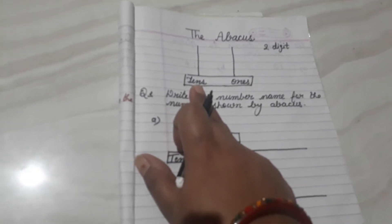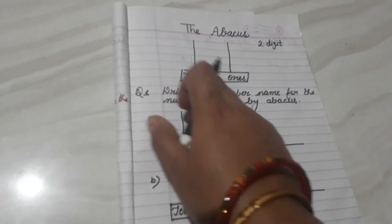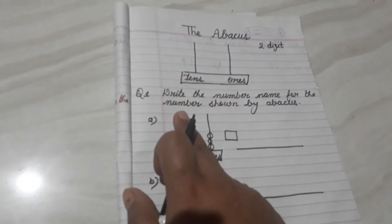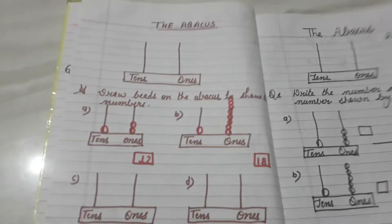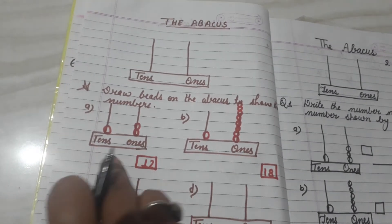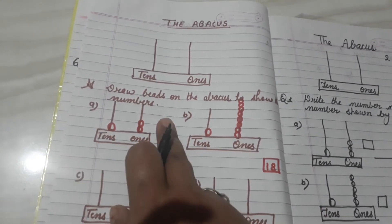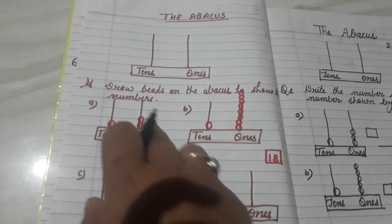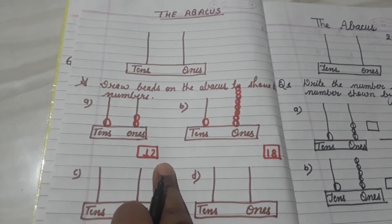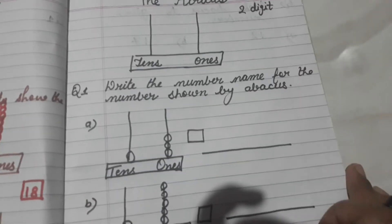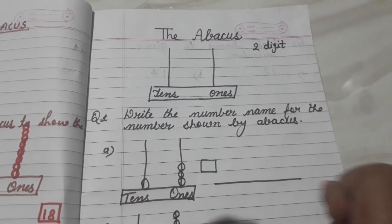So yesterday what we learned — I explained you how we can write the numbers by looking at the abacus. Yesterday I told you how to draw beads on the abacus to show the numbers. We made the beads on the abacus according to that number. Today, we will write the number name for the number shown by the abacus.